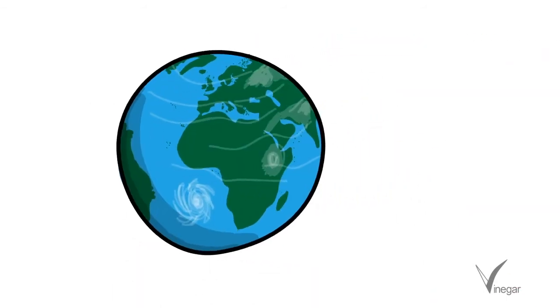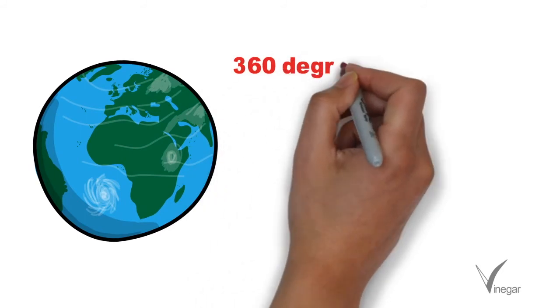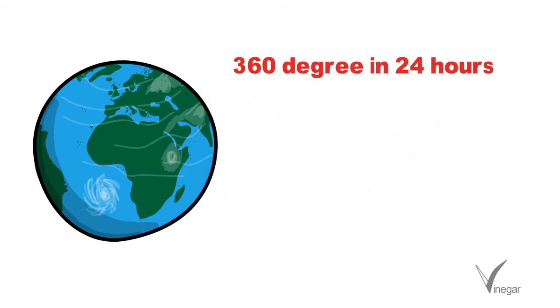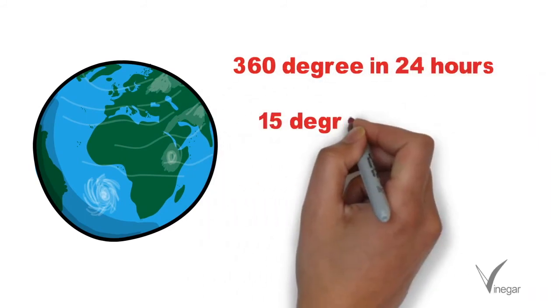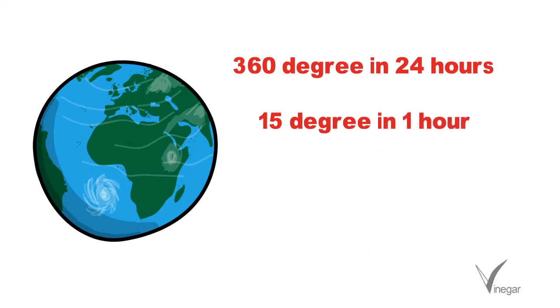Since earth completes its one rotation of 360 degrees in 24 hours, this means that it covers 15 degrees in 1 hour and 1 degree in 4 minutes.